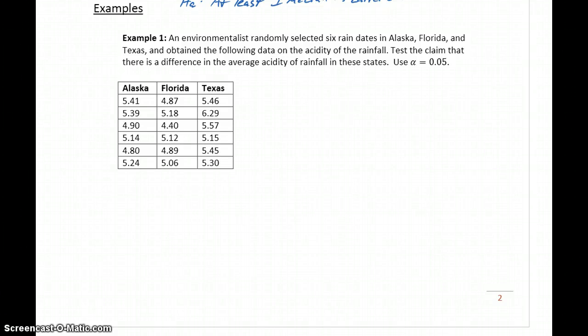In our first example, we have data from Alaska, Florida, and Texas, so three different samples measuring the acidity of rainfall in those different states. We want to test the claim that there's a difference in the average acidity of rainfall in these states.